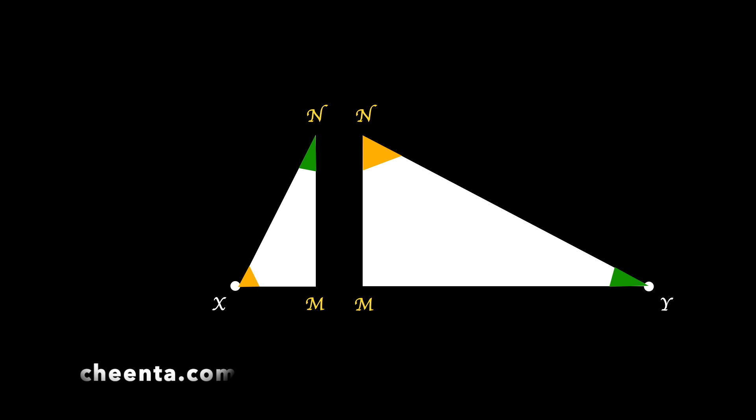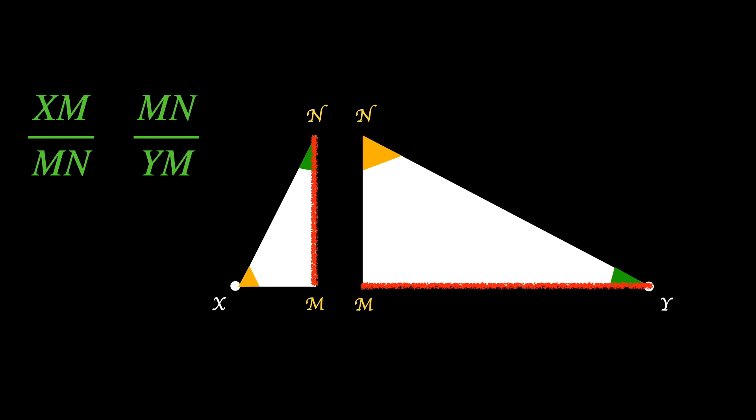So now we can use the fact that similar triangles have proportional sides. So let's look at the sides opposite to the green angles, XM and MN. These are the two sides opposite to the green angles. So let's take the ratio XM by MN. And then let's take the ratio of the sides opposite to the yellow angles. So that's MN by MY or YM.